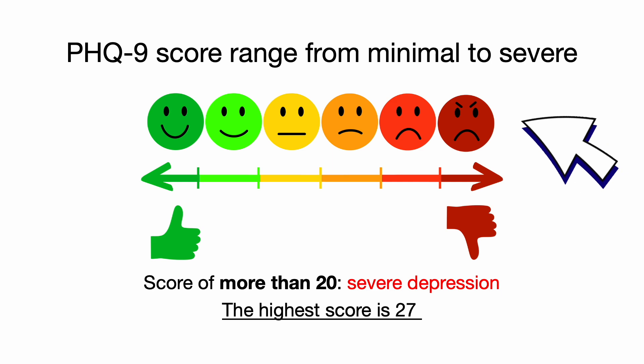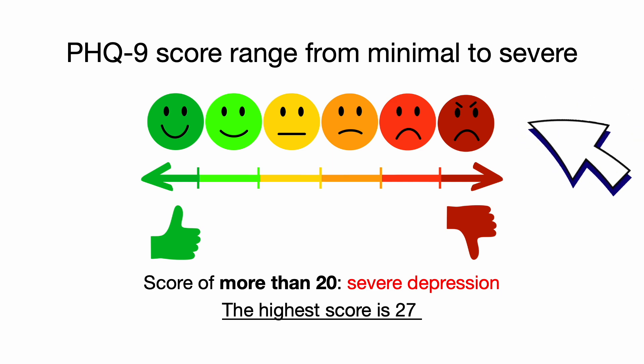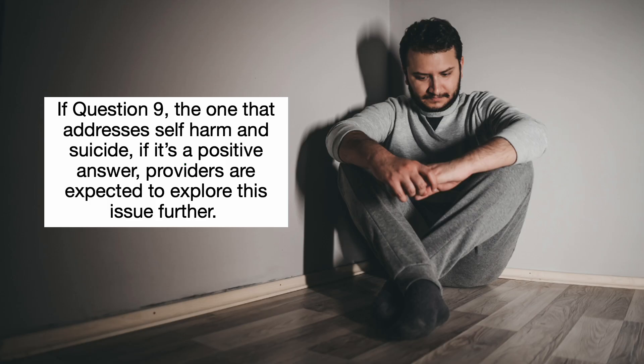A score of more than 20 indicates severe depression, and the highest possible score is 27. If question 9 — the one that addresses self-harm and suicide — receives a positive answer, providers are expected to explore this issue further.